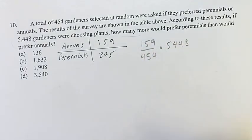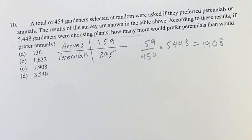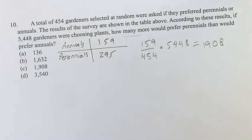If you do this in a calculator, obviously not asking to do this by hand, it's going to give you 1908. So out of those 5,448, 1908 would prefer annuals.